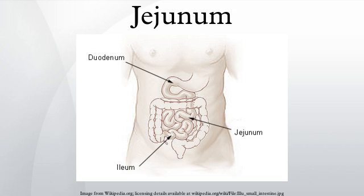The geodunum lies between the duodenum and the ileum. The change from the duodenum to the geodunum is usually defined as the duodenogedunal flexure and is attached, and thus hung up, to the ventricle by the ligament of trites.